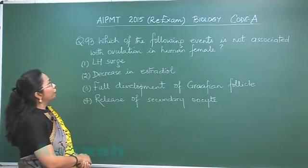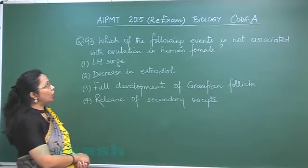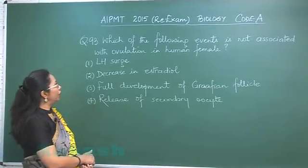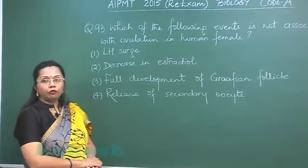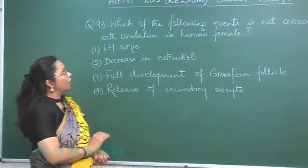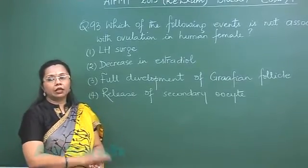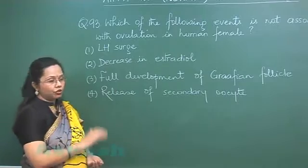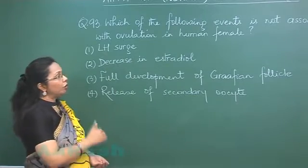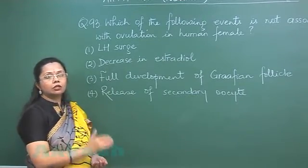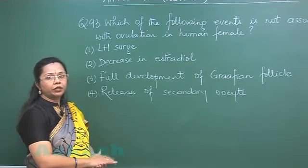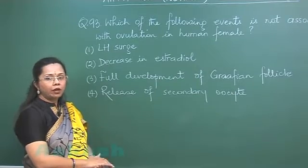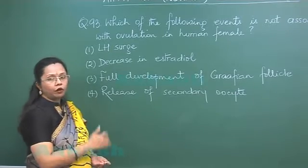Question 93: Which of the following events is not associated with ovulation in the human female? At the time of ovulation, there is a sudden increase in the level of LH, called LH surge. This certainly happens because LH surge occurs at least 12 to 24 hours before ovulation, preparing the mature follicle for rupturing.